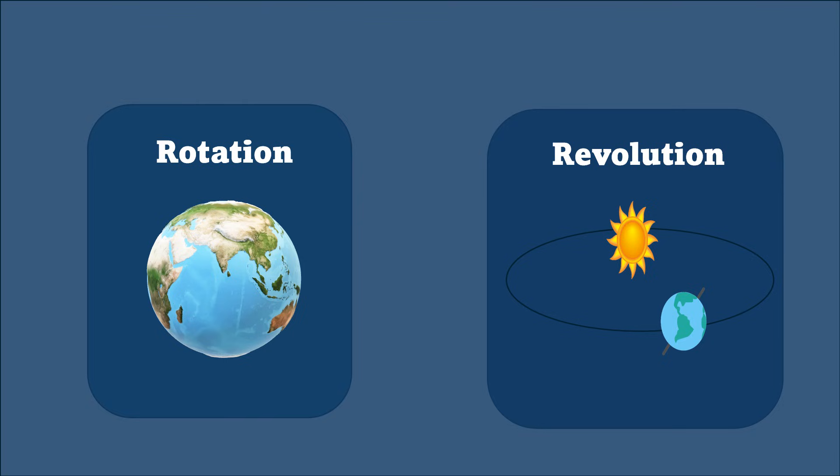Rotation is the one where the Earth is revolving around its axis. Revolution is the one where it is revolving around the sun. But today we are going to focus on rotation because that is what gives us day and night.